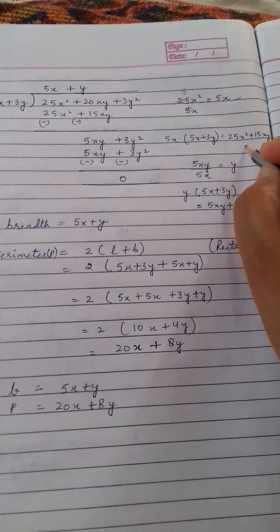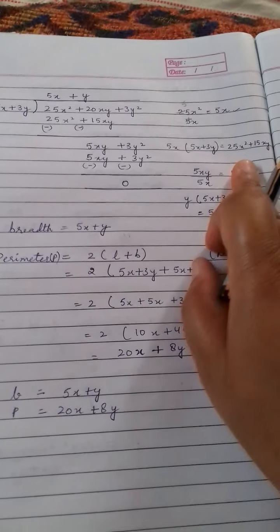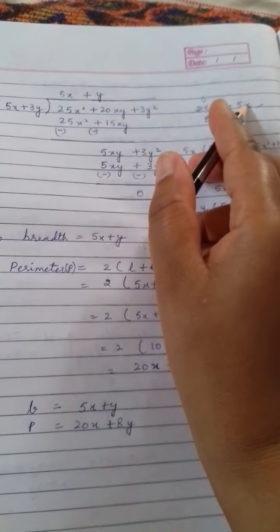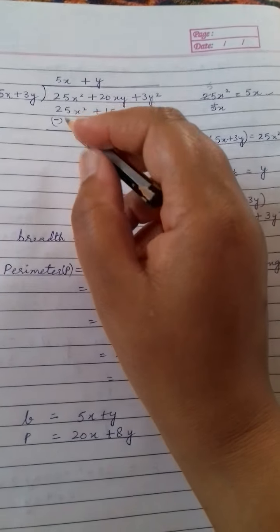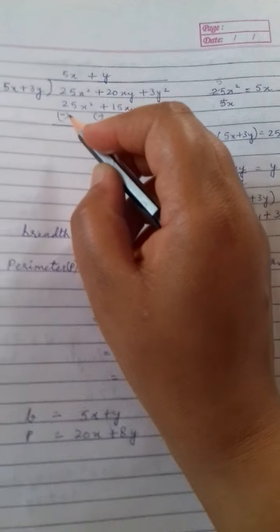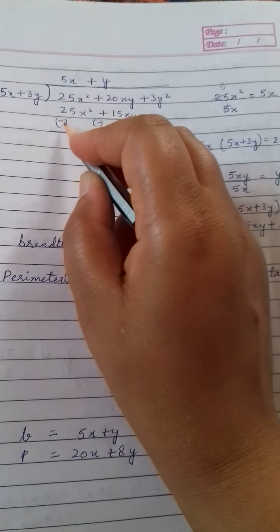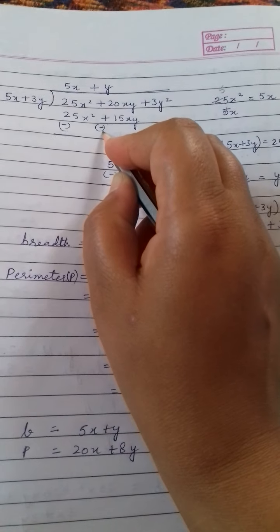You will get 25x square plus 15xy. Now keep it here and keep this 5x over here. Now in order to subtract, change the sign. Here it is plus, so minus plus. Therefore we will put a minus.